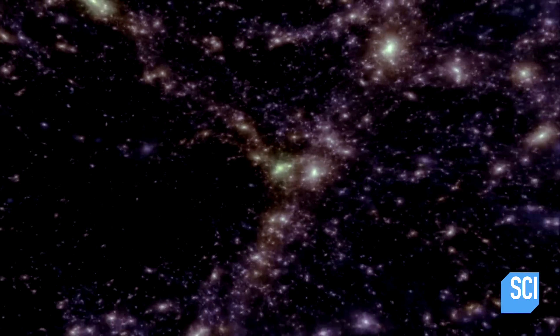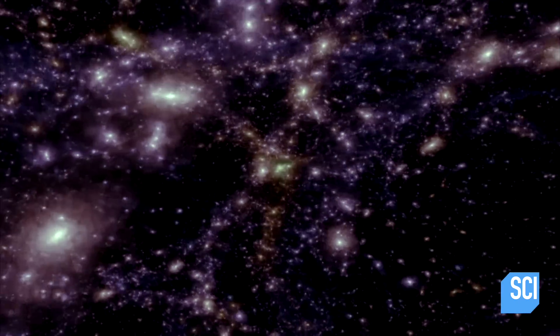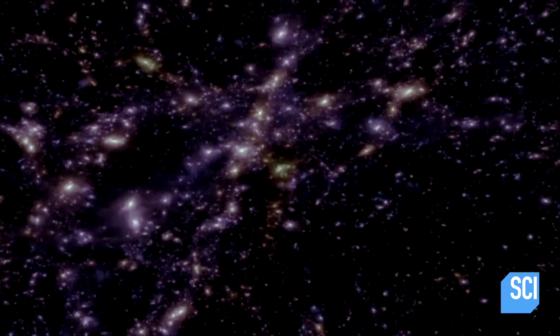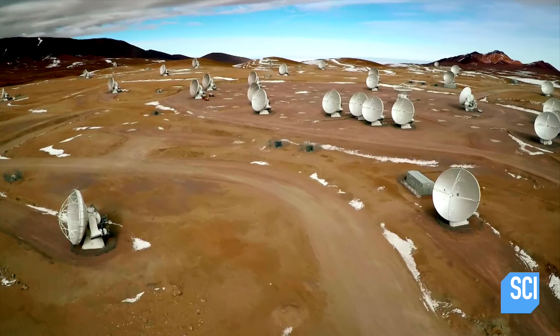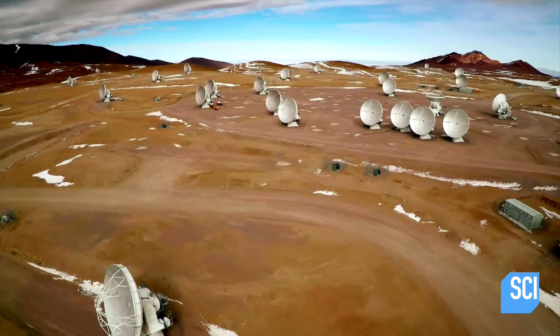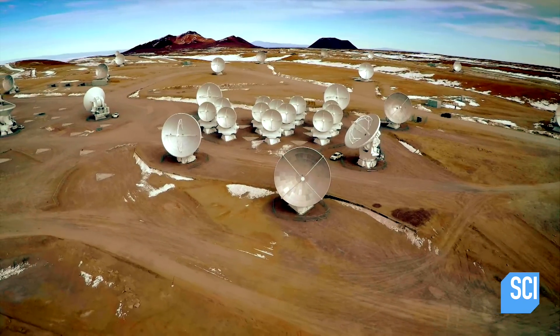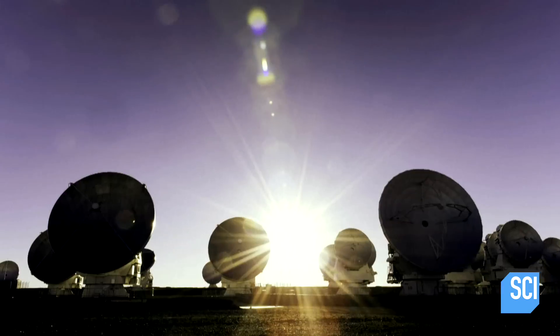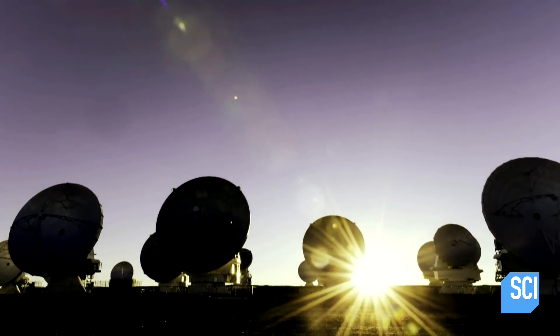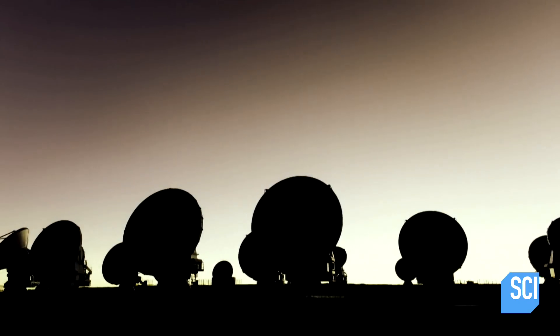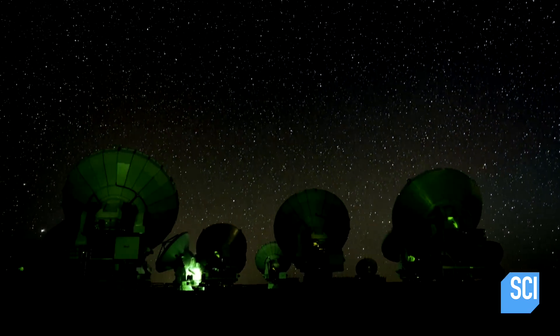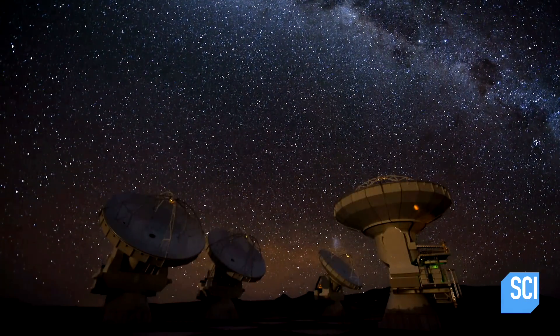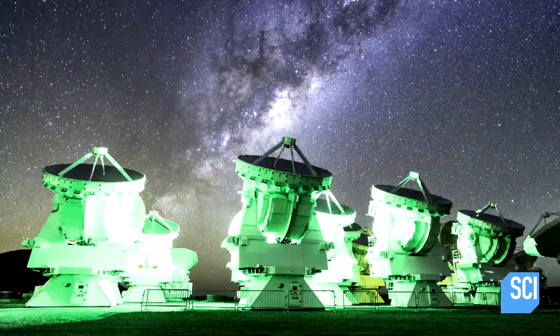To understand how these vast galactic structures formed, astronomers use telescopes like the Atacama Large Millimeter Array, or ALMA for short. It's an array of 66 radio telescopes and so powerful it can peer back billions of years to the formation of the earliest galactic structures.